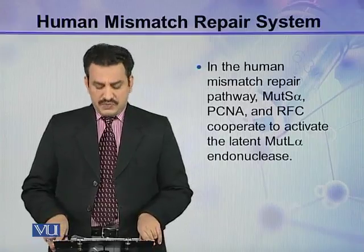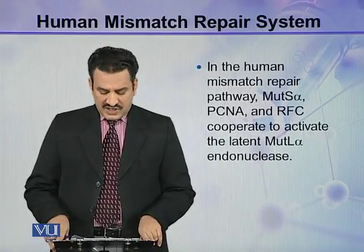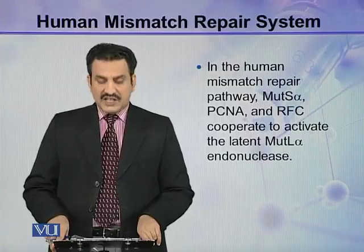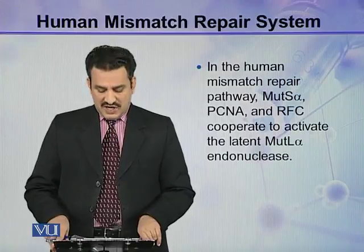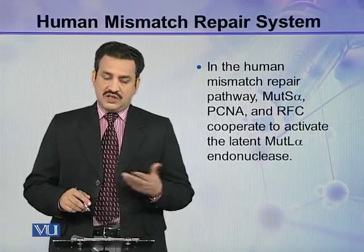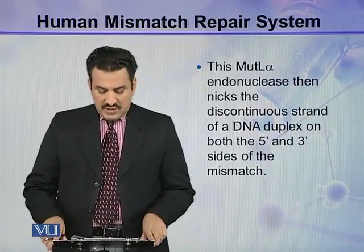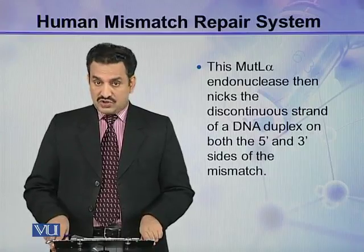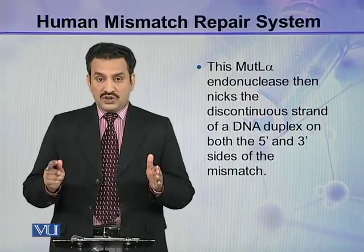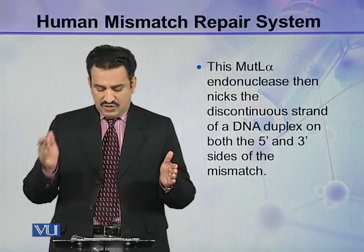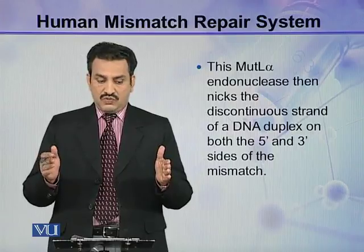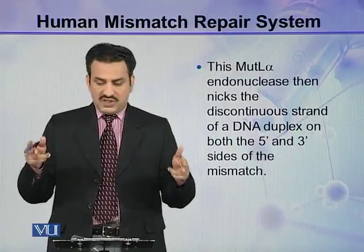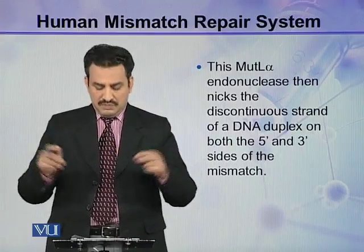In the human mismatch repair pathway, MutS-alpha, PCNA, and RFC cooperate to activate the latent MutL-alpha endonuclease. This MutL-alpha endonuclease then NICs the discontinuous strand of the DNA duplex on both the 5' side and the 3' sides of the mismatch. Once activated, it introduces two NICs on both sides — that is, 5' and 3' — of the mismatch.